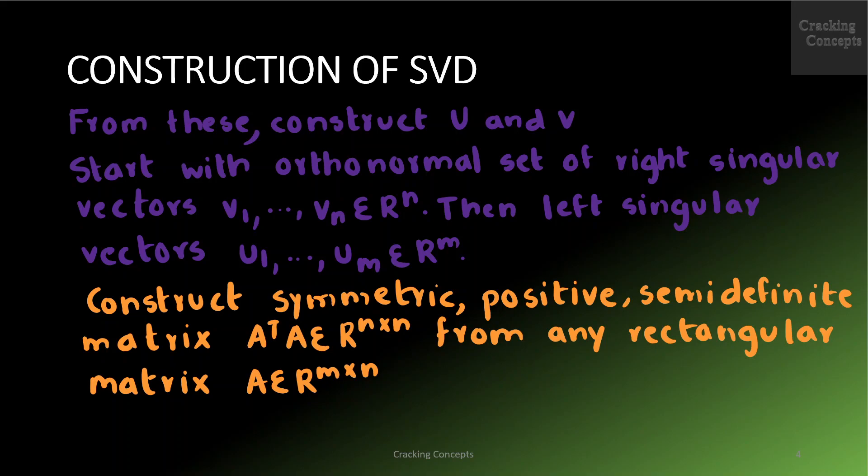We then construct the orthonormal set of left singular vectors U1 to UM belonging to R^M. Then we will link the two and require that the orthogonality of the Vi is preserved under the transformation of A.